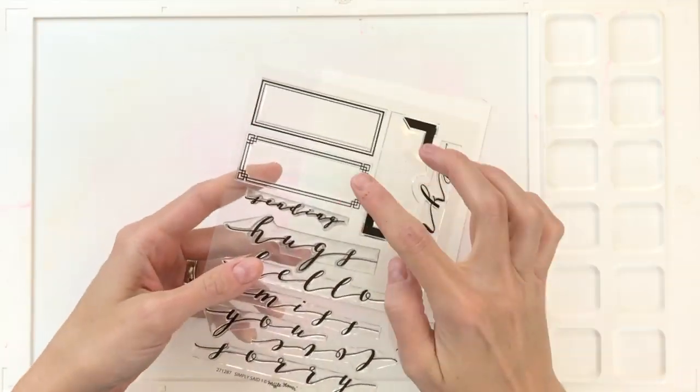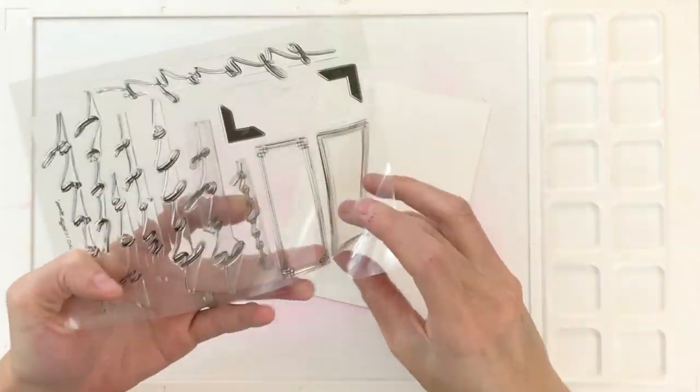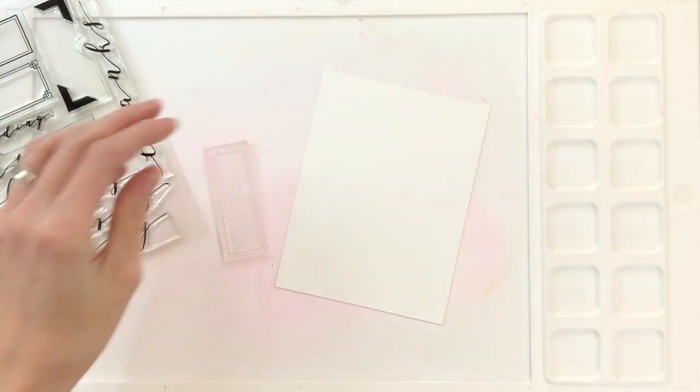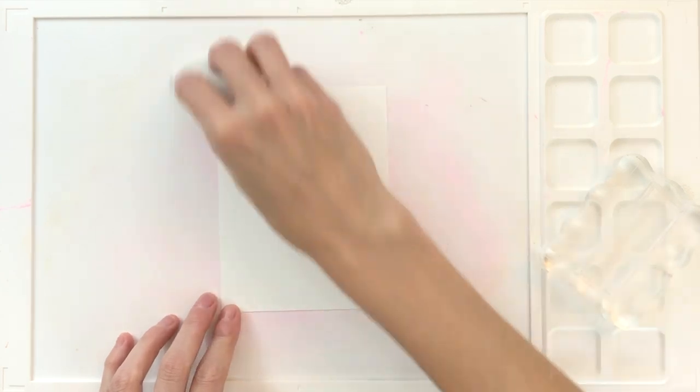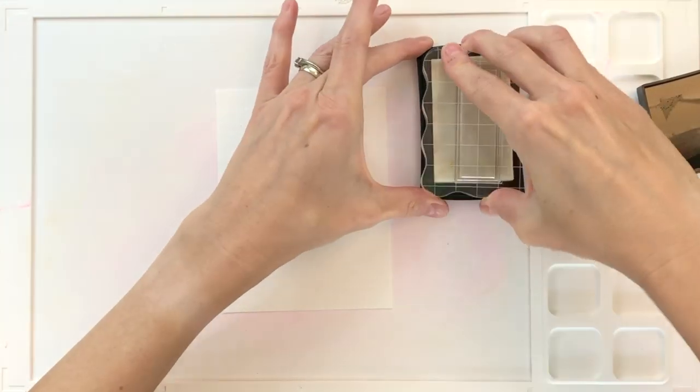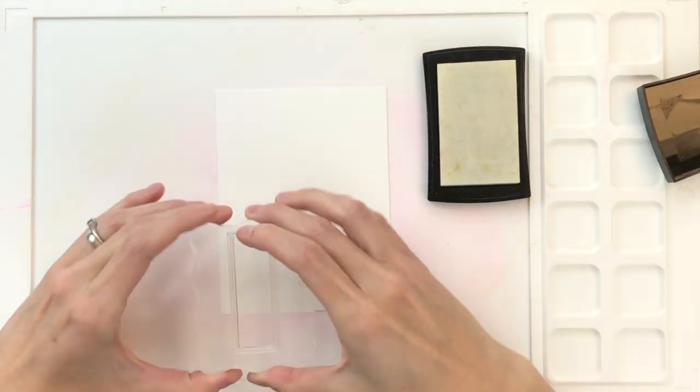The set also comes with some frames. We're going to use one of these frames to actually create our background. I pulled off one of the frames from the set and I'm going to mount it onto an acrylic block. I have an A2 panel here of Canson Cold Press watercolor paper. I'm going to cover it with some anti-static powder, and then I'm going to grab my VersaMark ink pad and ink up this frame stamp.